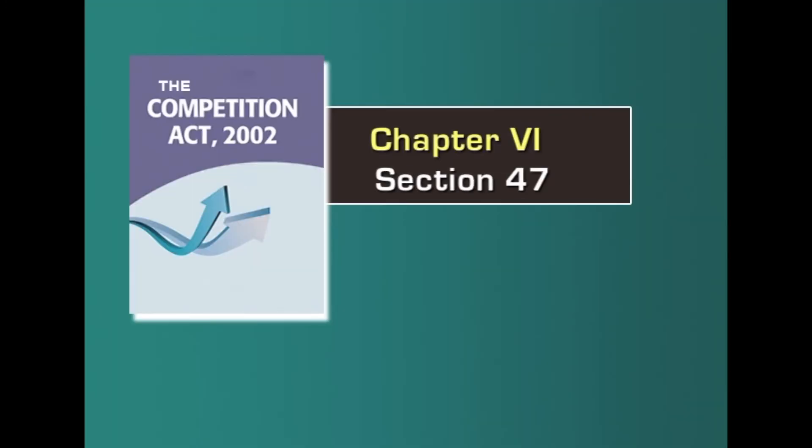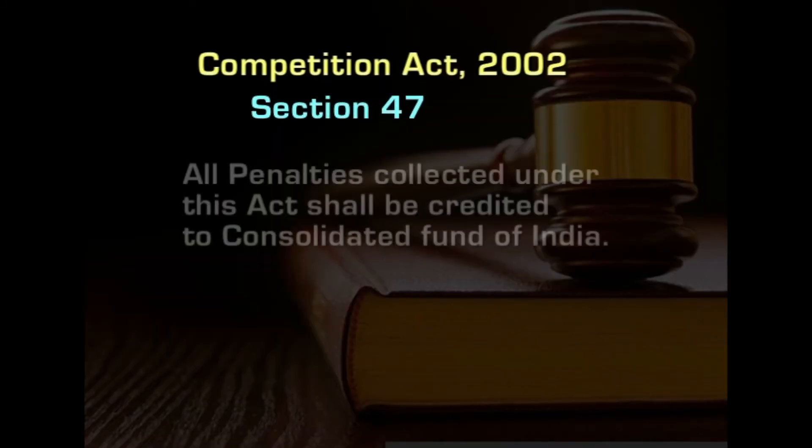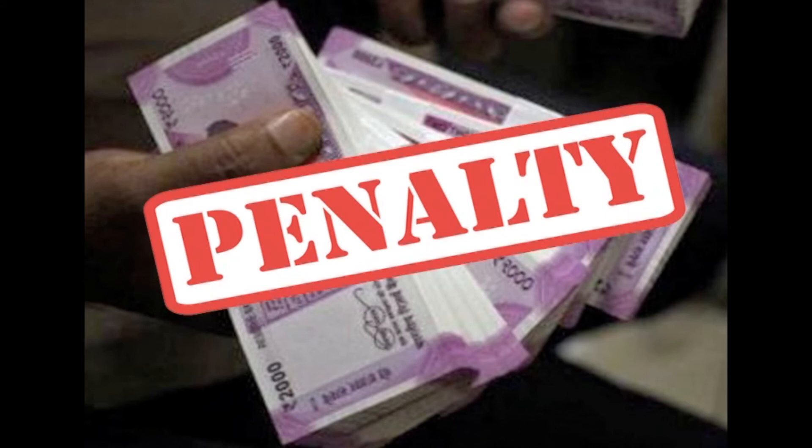The next section is section 47, which generally talks about what happens to all the penalties collected — penalties and punishments imposed on persons contravening the provisions of this act. Section 47 says that all penalties collected under this act shall be credited to the Consolidated Fund of India. This is provided to ensure there is transparency with regard to funds collected in the form of penalty.